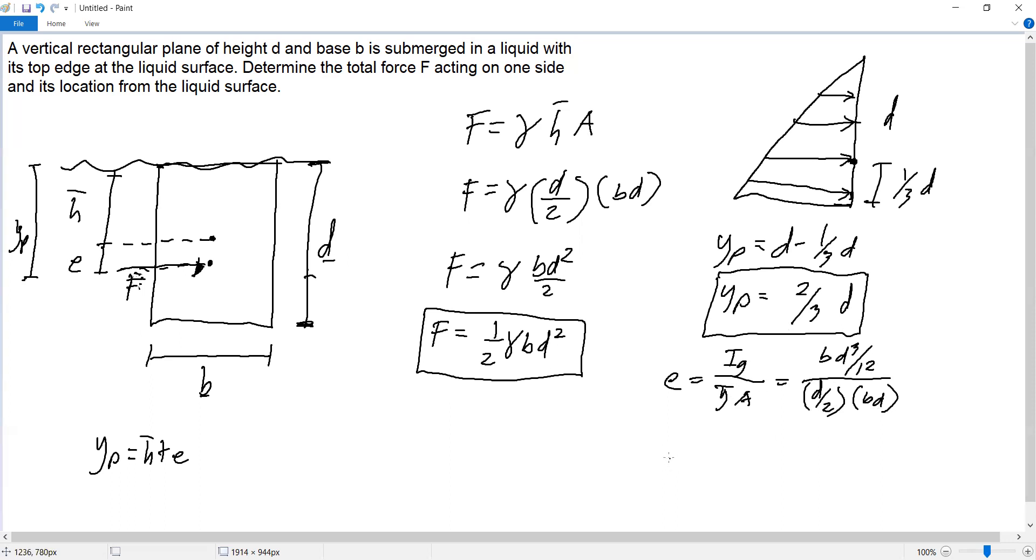Therefore e equals, if we simplify, cancel out B, then D, then D cubed over D squared leaves D, then divide, so D over 6. This is e. Then since yp equals h bar which is D over 2 plus e, D over 6, therefore...